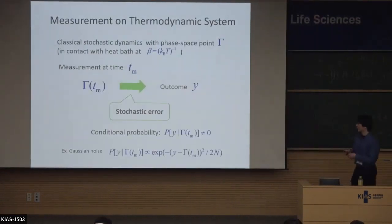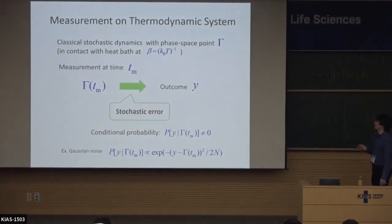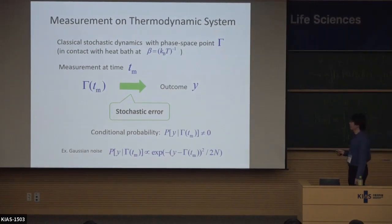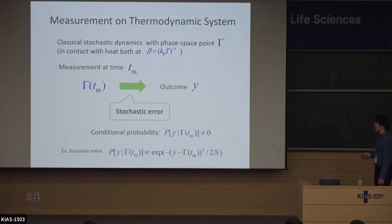The situation can be very general. There is a classical system that is described by a phase-space point eta and there is a heat bath at temperature beta. The demon performs a measurement about the system and its measurement outcome is given by Y. In general, there is some stochastic error during the measurement. The measurement error is characterized by the conditional probability like this. For example, the simplest example is the Gaussian noise.